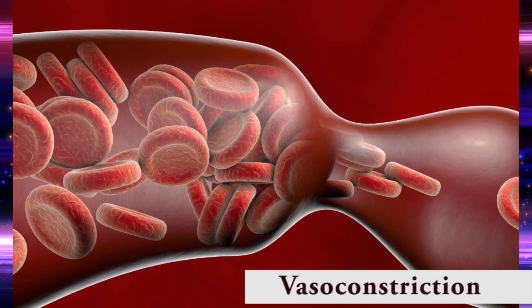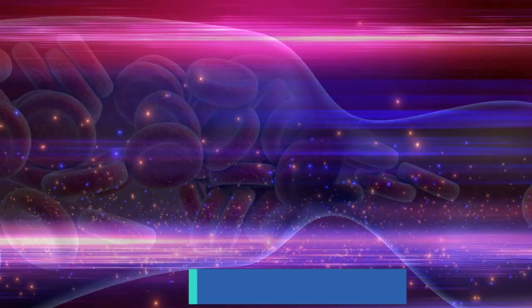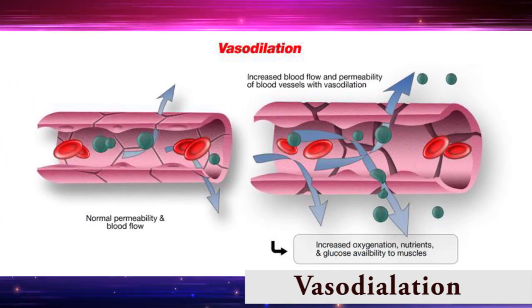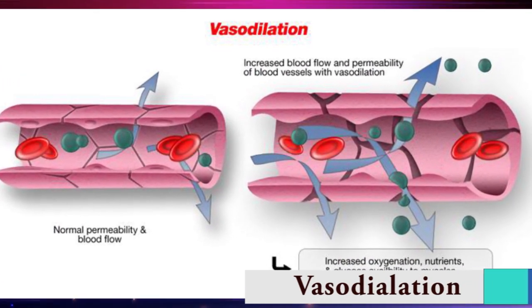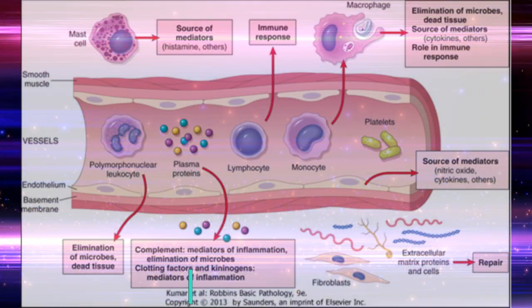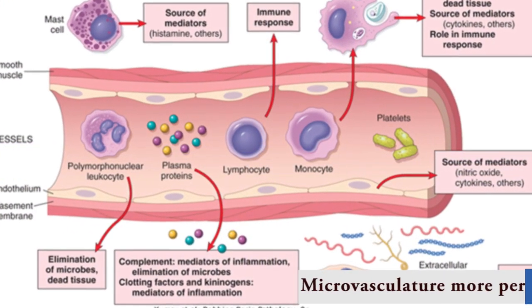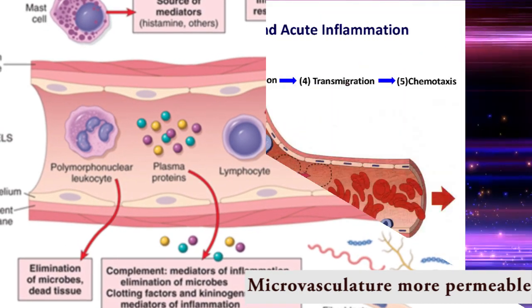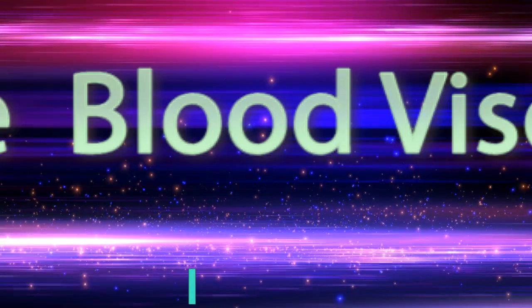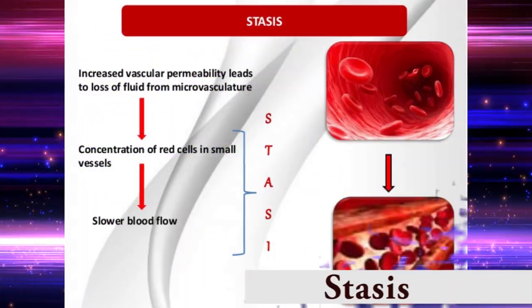Vasoconstriction lasting only a few seconds is followed by vasodilation, resulting in locally increased blood flow and engorgement of the downstream capillary beds. The microvasculature becomes more permeable, so protein-rich fluid moves into extravascular tissues. This increases blood viscosity, slowing the circulation.